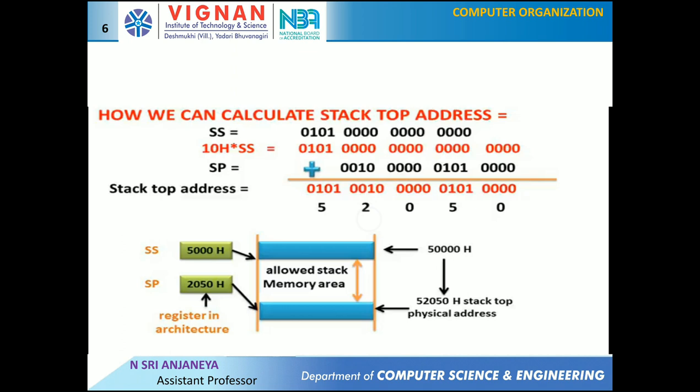Location 52050H is already occupied — previously pushed data is available at 52050H. The next 16-bit push operation will decrement the stack pointer by 2, so it will point to the new stack top at 5204EH, and the decremented contents of SP will be 204EH. This location will now be occupied by the recently pushed data. Thus, if a 16-bit data is pushed onto the stack, the push operation decrements SP by 2 because two locations are required for a 16-bit data word.